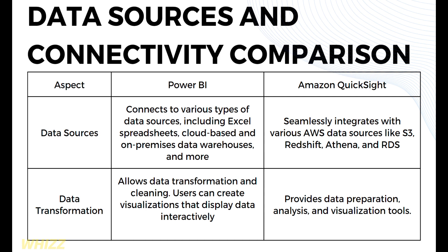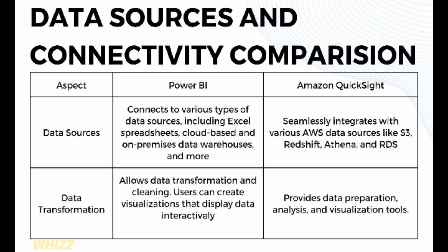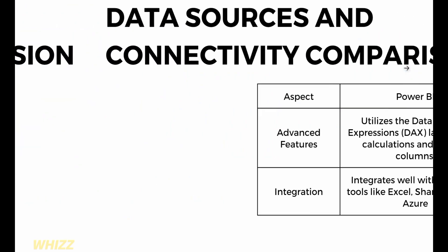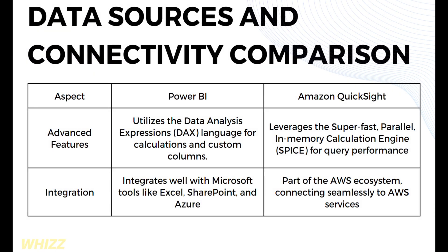In terms of data transformation, Power BI allows data transformation and cleaning, and users can create visualizations that display data interactively. Amazon QuickSight provides data preparation, analysis, and visualization tools. In terms of advanced features, Power BI utilizes the Data Analysis Expressions, or DAX, language for calculations and custom columns. While Amazon QuickSight leverages the SPICE — Super-fast Parallel In-Memory Calculation Engine — for query performance.